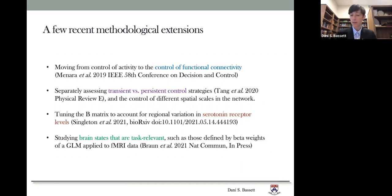Secondly, we can separately assess transient control strategies, control strategies that are very swift and short over short time scales, versus persistent control strategies, ones that have to expand over long time periods. We can also use those approaches to understand the control of different spatial scales of dynamics in the network. The third extension I want to mention is tuning the B matrix, which indicates where inputs are being injected into the system. You can tune that to account for regional variation in serotonin receptor levels. And this is really exciting work from Singleton and colleagues.